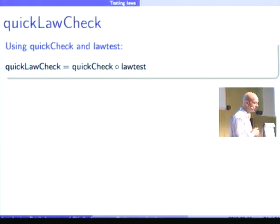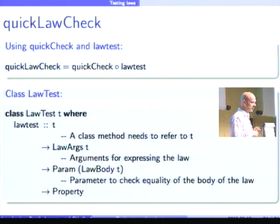So, how do I test these? Well, I have this function QuickLawCheck, which QuickChecks after turning a law into something that can be QuickChecked. So, I'm using a function lawtest. And this lawtest is a method of the class LawTest. It takes a t-value to steer the types, because you have to refer to a t-value in the class method. Then it takes the arguments for the law. Then it takes a parameter needed to test the equality of the LawBody. And then it returns a QuickCheck property, which can be tested by QuickCheck.